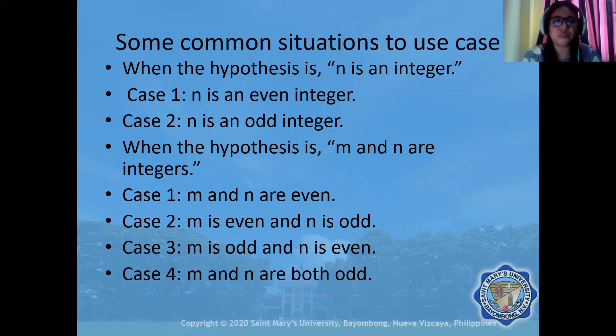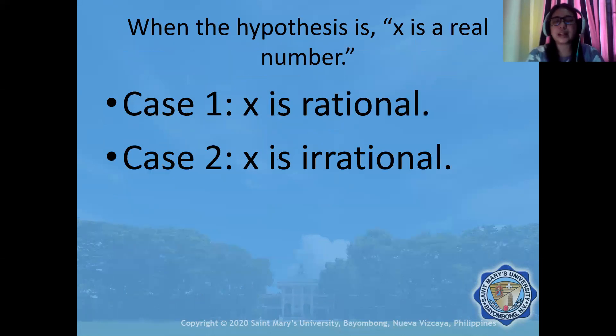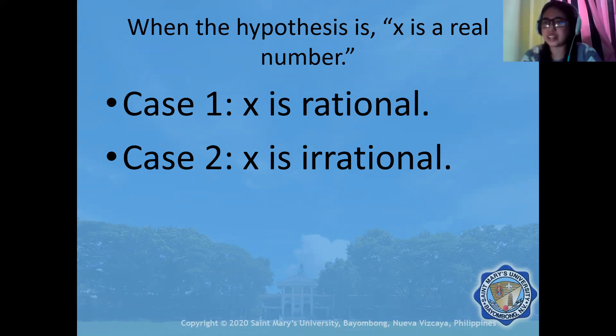When the hypothesis is x is a real number, and it is not indicated whether it is rational or irrational, then you need to consider two cases. Case one: x is rational. Case two: x is irrational.